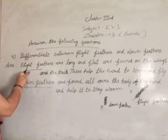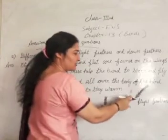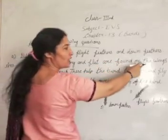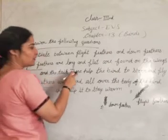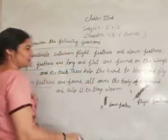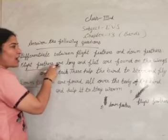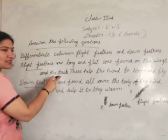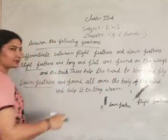Flight feathers are long and flat. They are found on the wing and the tail. They help the birds to feel and fly. Flight feathers are long and flat, are found on the wing and the tail, and help the birds to fly.